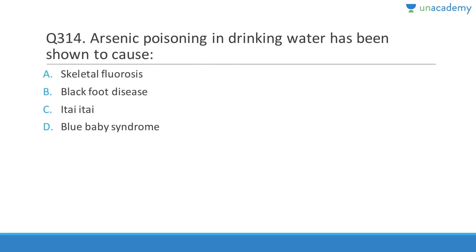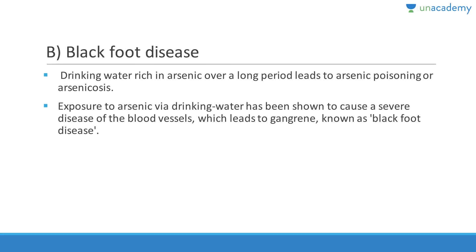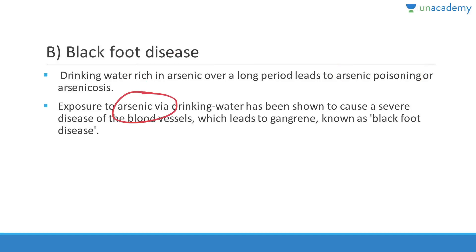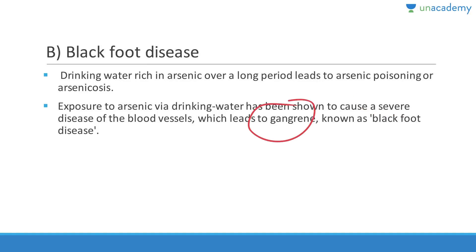Question 314: Arsenic poisoning in drinking water can cause cancer and is also called blackfoot disease. Answer is B. Drinking water rich in arsenic over a long period leads to arsenicosis — causing a severe disease of blood vessels leading to gangrene, known as blackfoot disease.